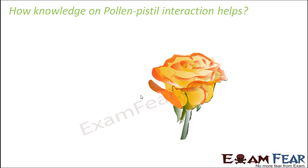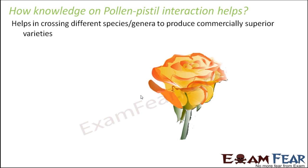How does knowledge of pollen-pistil interaction help? If we have a good knowledge of which pollen-pistil interactions are compatible and which are incompatible, we can decide which pollen grains can be fused with which type of egg cell. We can breed different varieties of plants to get better varieties, crossing different species or genera to produce commercially superior varieties. Without this knowledge you would just keep doing trial and error, but knowing compatibility allows you to crossbreed effectively.